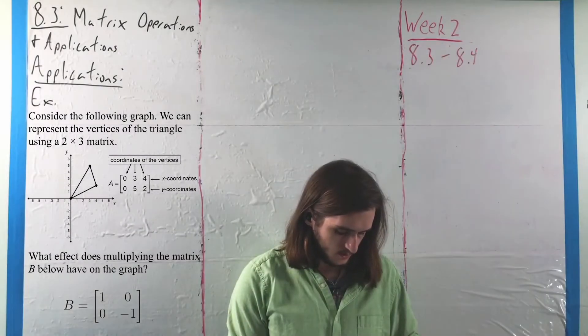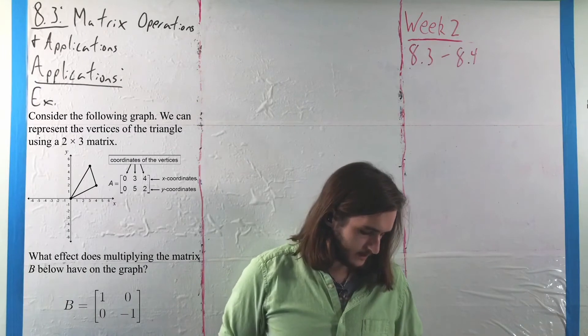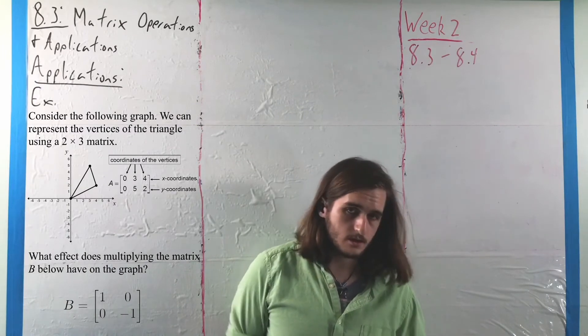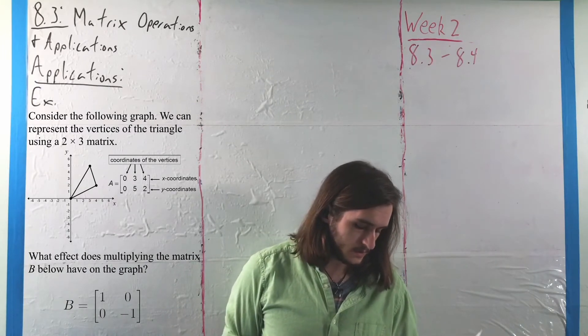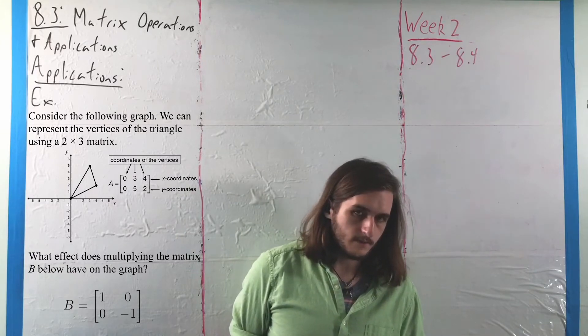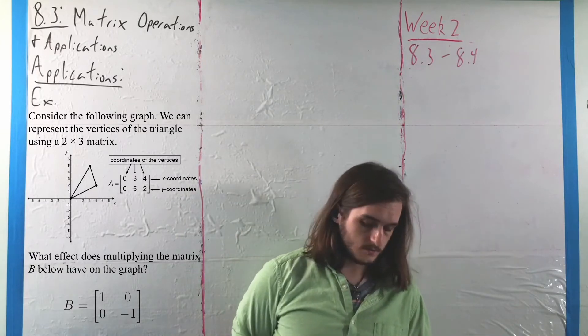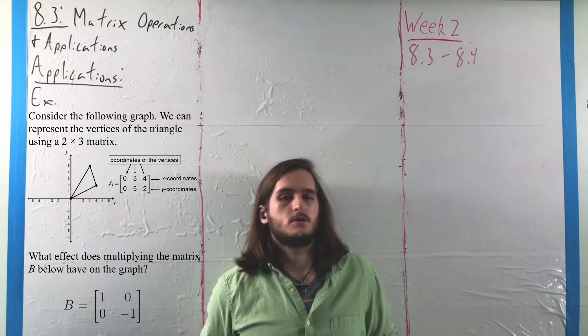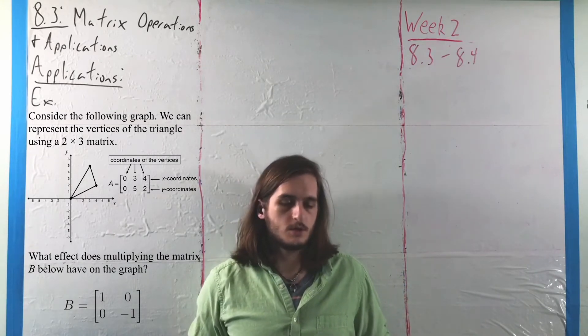So for this application, we're going to consider the given graph where we can represent the vertices of the triangle in that graph at points (0, 0), the origin, (3, 5), and (4, 2) in terms of a 2 by 3 matrix. So it's a different way of using a matrix to represent something that we're maybe a bit more familiar with.